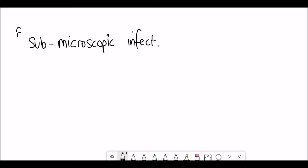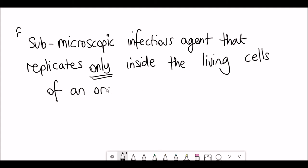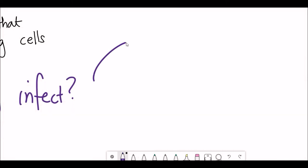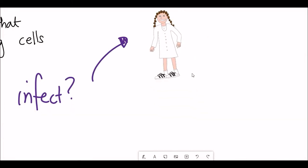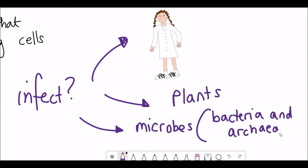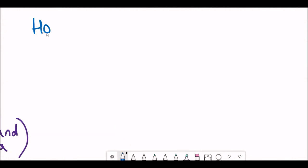So let's start with the definition. Viruses are sub-microscopic infectious agents that replicate only inside the living cells of another organism. Viruses can infect all types of life forms, and so this doesn't just mean animals — they can also infect plants and other microorganisms, including bacteria and archaea. And actually the majority of viruses infects microbes.